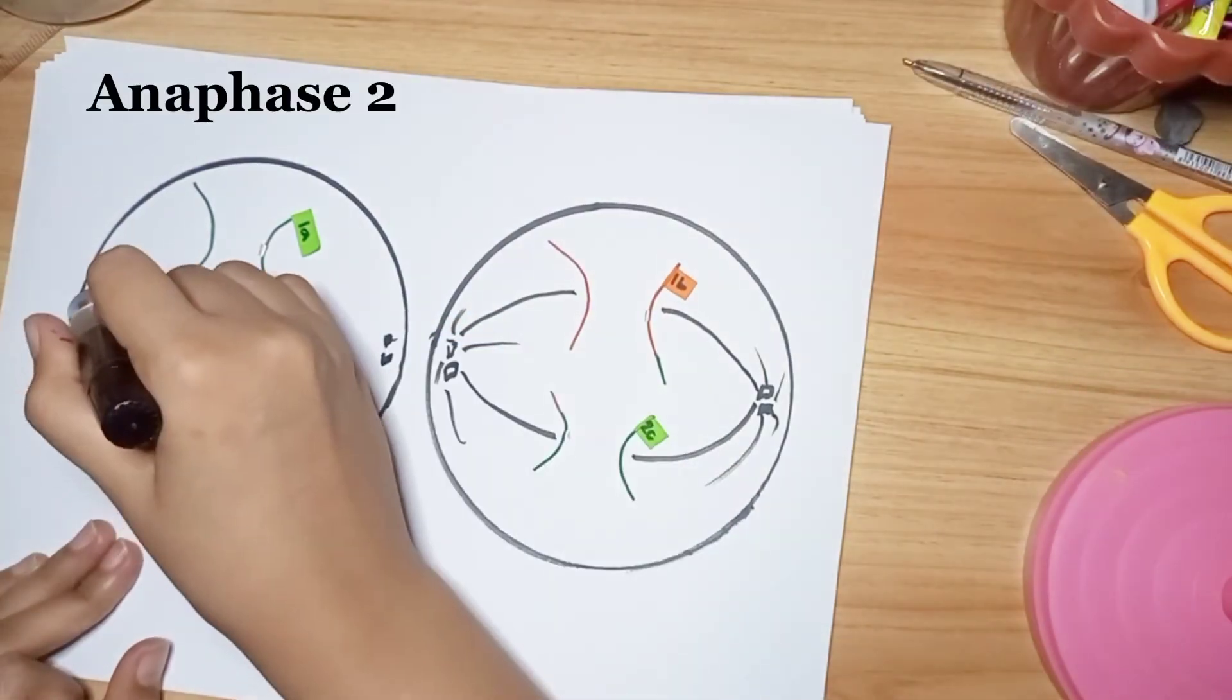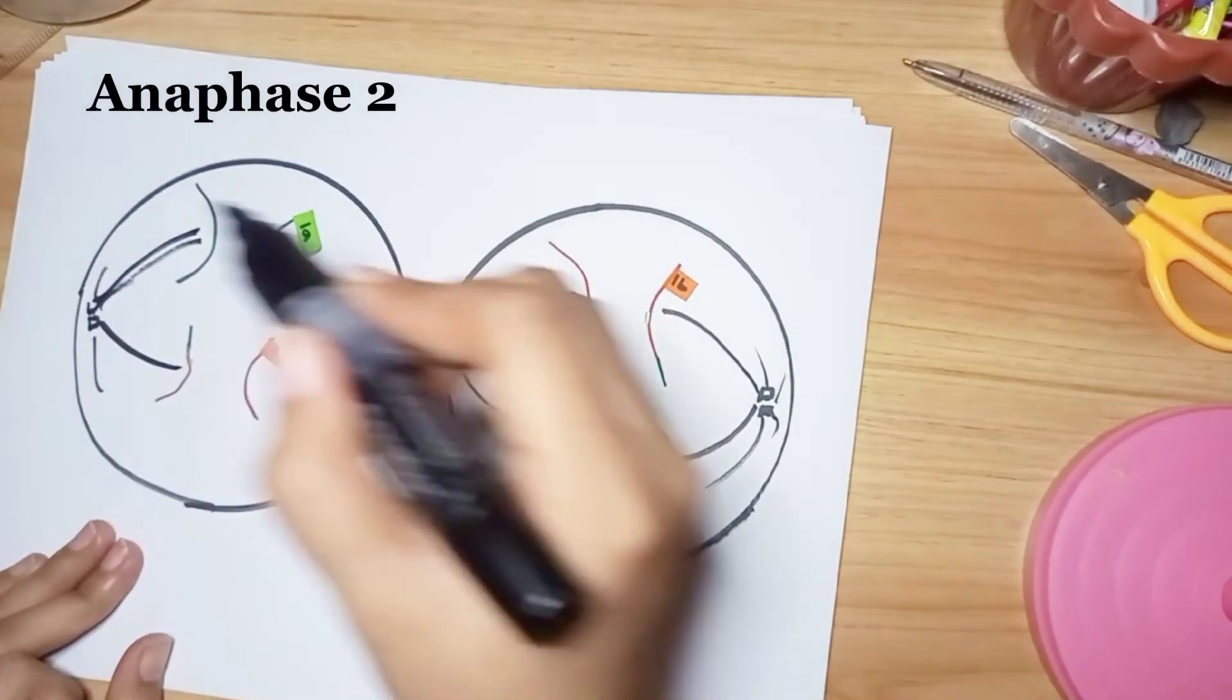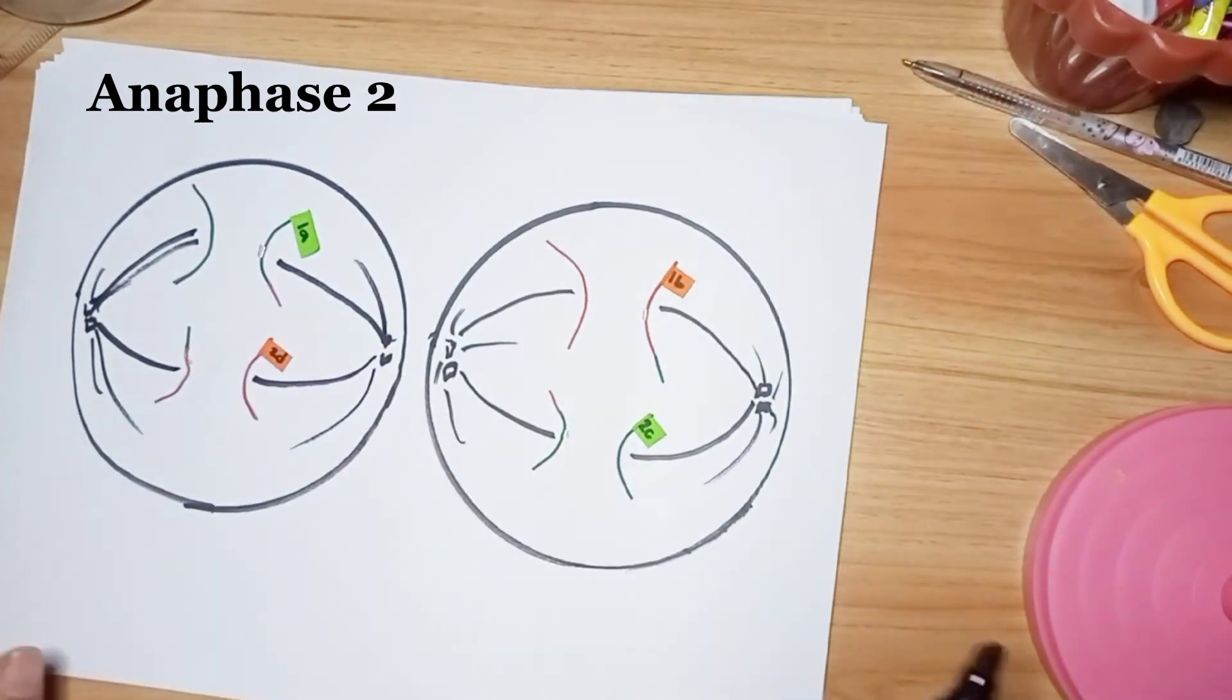In anaphase II, the sister chromatids separate and are pulled towards opposite poles of the cell.